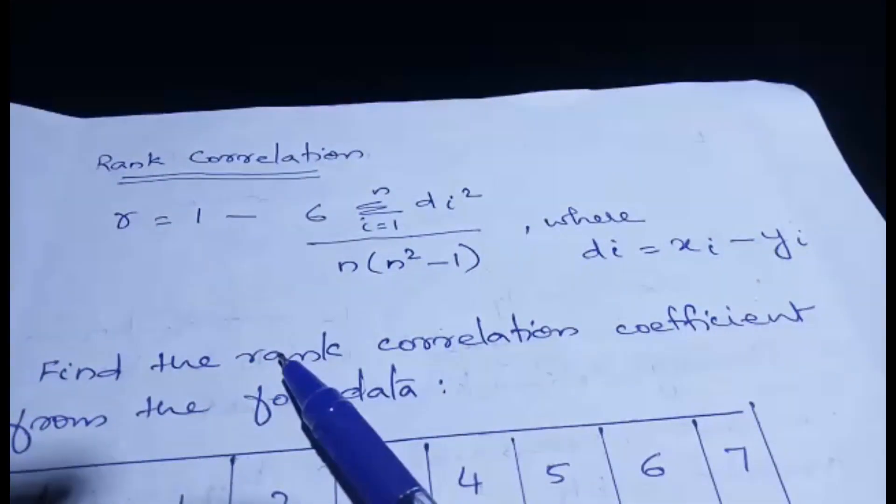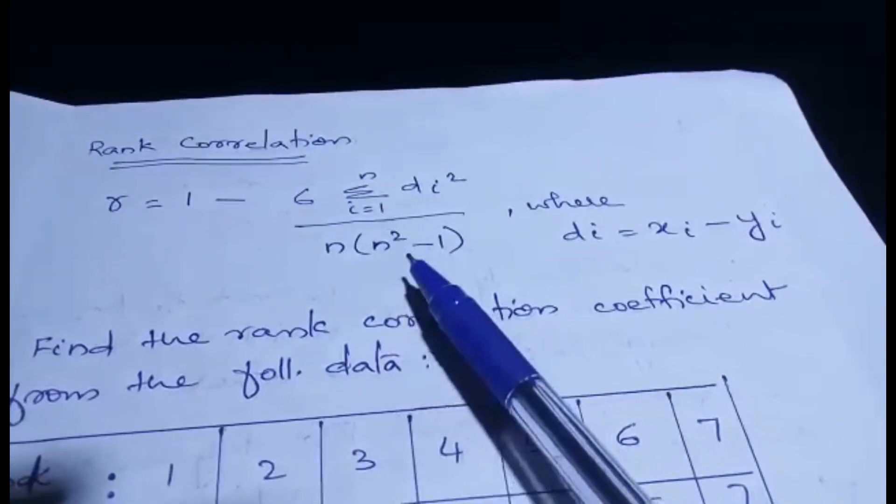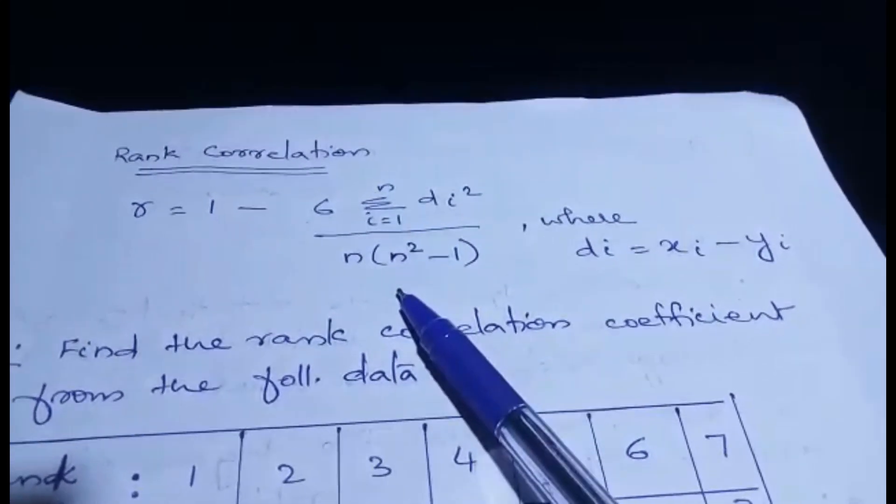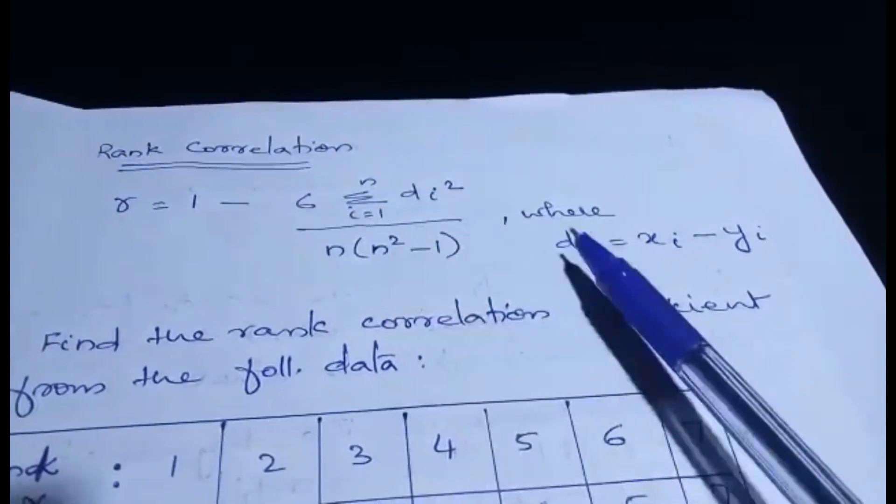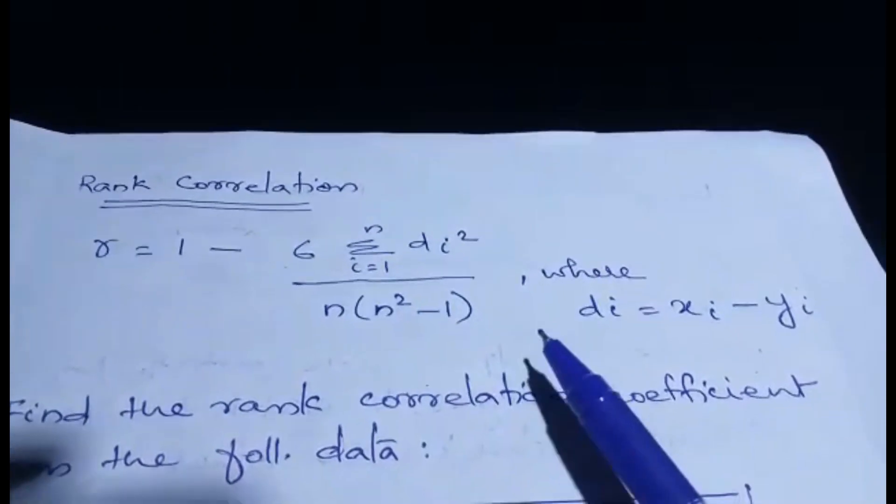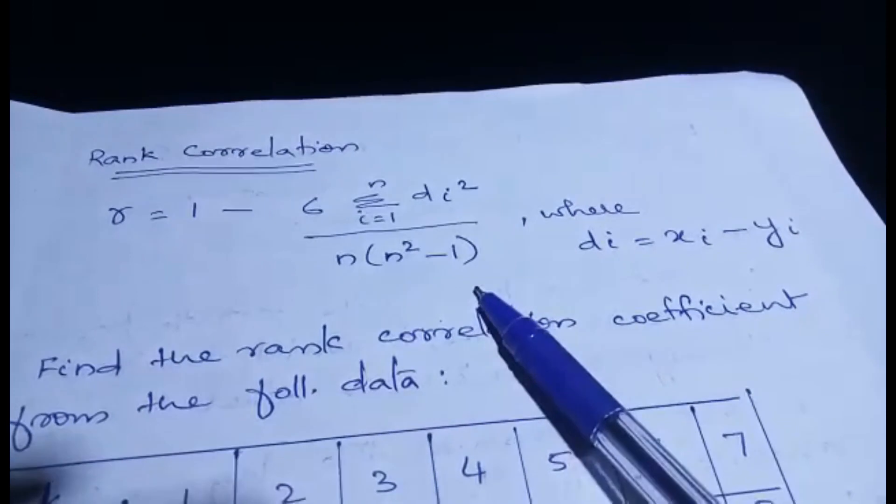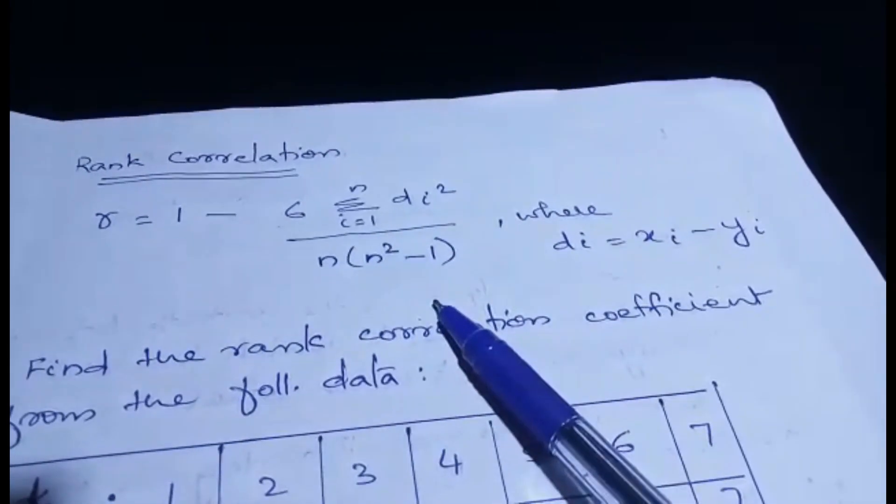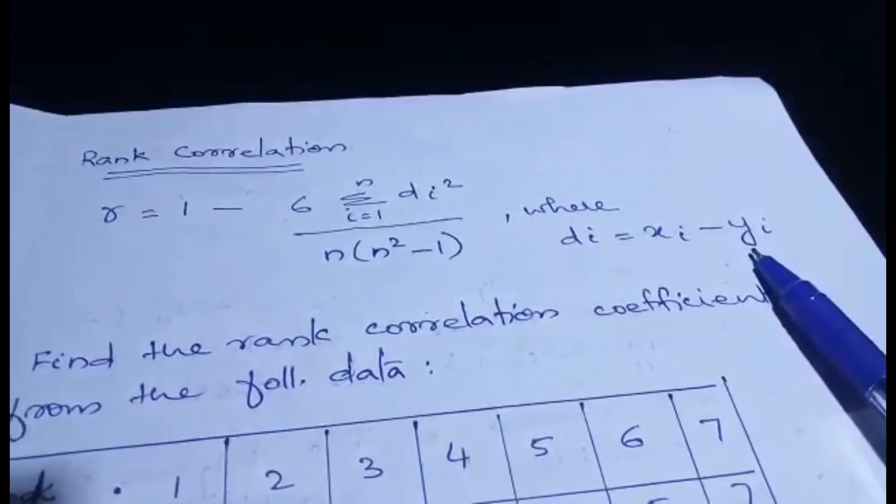The formula is given: r is equal to 1 minus 6 into sigma di square, i ranging from 1 to n, divided by n into n square minus 1, where di is equal to xi minus yi.